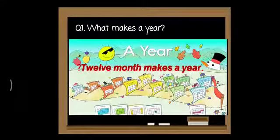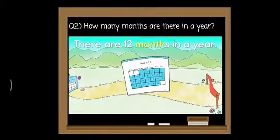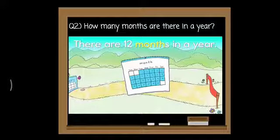A year — what makes a year? Twelve months make a year. How many months are there in a year? There are twelve months in a year.